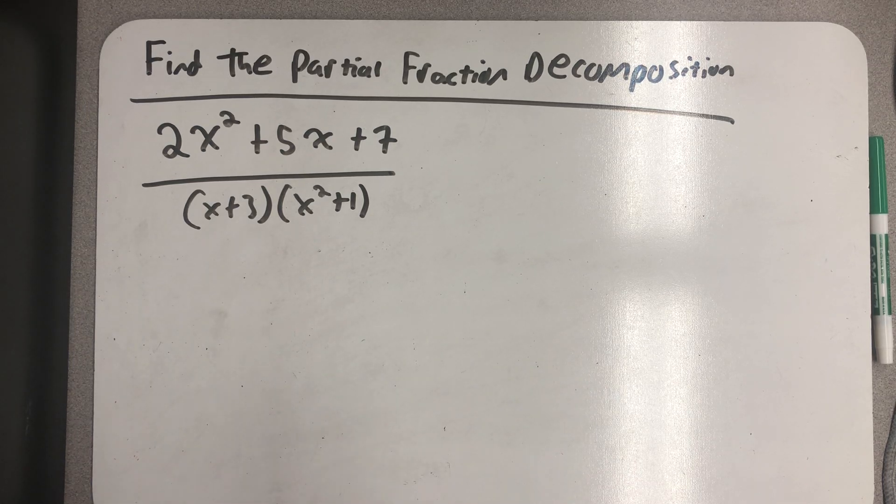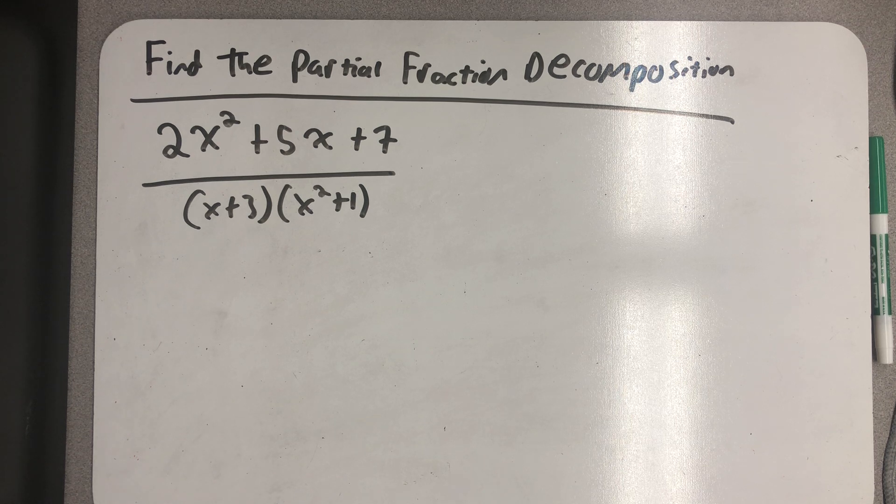Find the partial fraction decomposition of 2x squared plus 5x plus 7 all over x plus 3 times x squared plus 1.